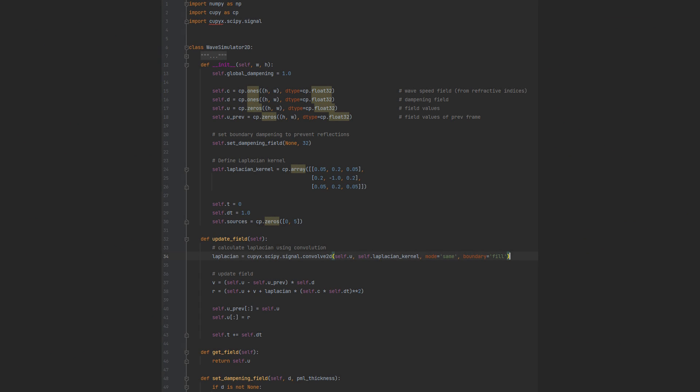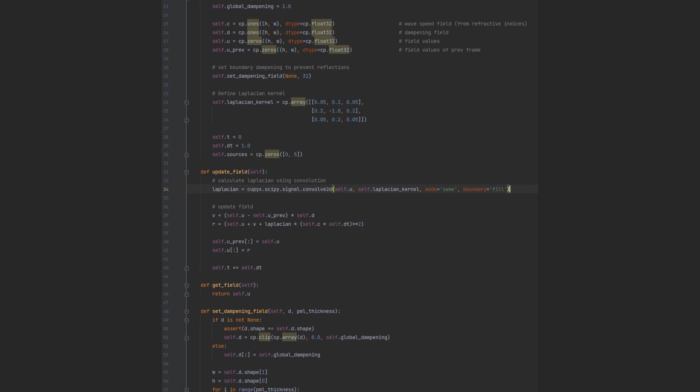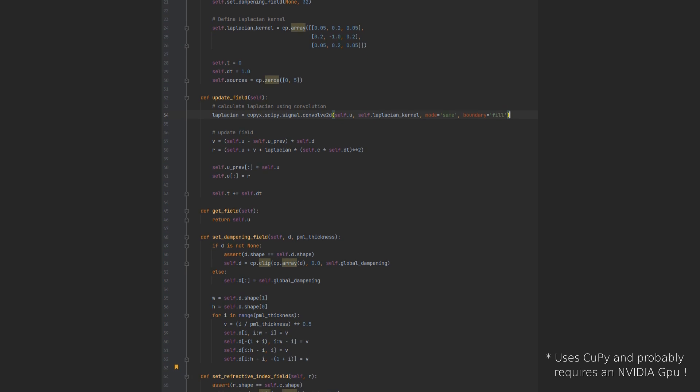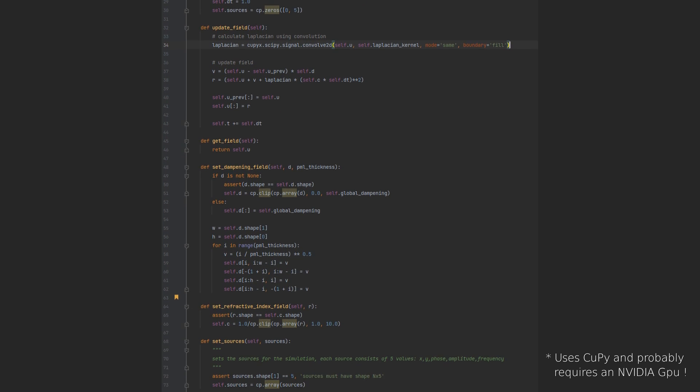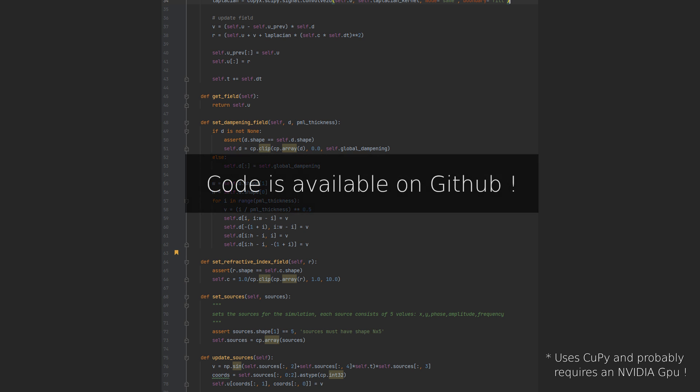The source code of the actual simulation is surprisingly simple and short. It has less than 80 lines and runs on the GPU. Viewers who are inclined to experiment with the simulation themselves will find the code on GitHub. The link is in the video description.